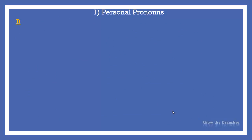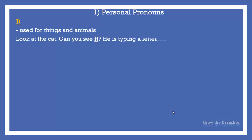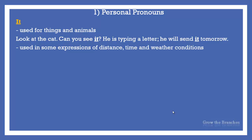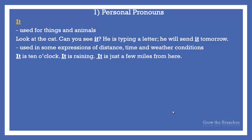The pronoun it is used for things and animals. Look at the cat — can you see it? He is typing a letter — he will send it tomorrow. It is used in some expressions of distance, time, and weather conditions: It is just a few miles from here. It is 10 o'clock. It is raining.